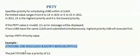The highest priority job will execute first. For example, if Job A, Job B, Job C, and Job D are submitted in parallel, and Job A has priority 12, Job B has priority 9, Job C has priority 5, and Job D has priority 3, then Job A will execute first.